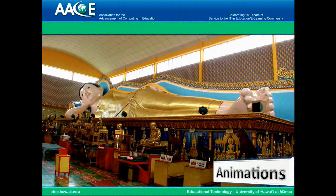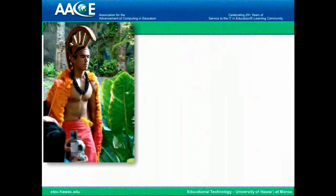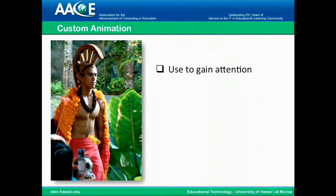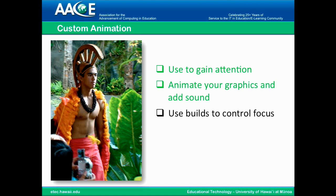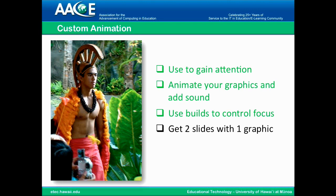Animations. You can use custom animation to gain attention. You can also use it to animate your graphics and add sound. You can use builds to control the focus. Builds are what I've been using in this slide — they turn green after you've used them, and that allows you to focus on what you're saying, because people can read faster than you speak. You can get two slides with one graphic by duplicating the slide and using different bullet points on the second slide.